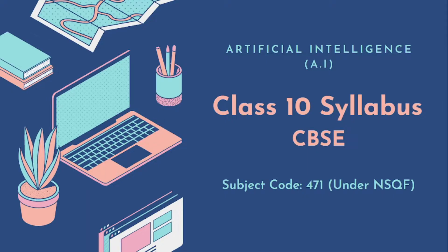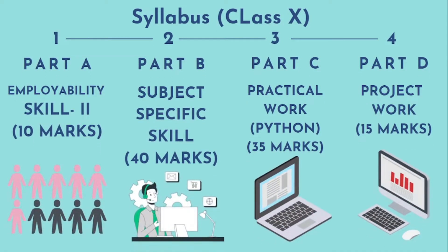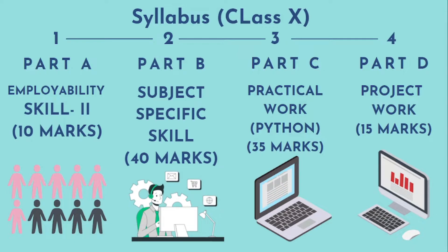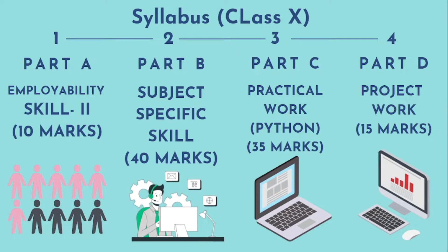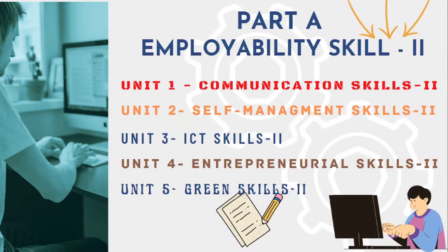The Class 10th Artificial Intelligence syllabus is bifurcated into 4 parts. Part A is Employability Skills, which carries 10 marks. Part B is Subject Specific Skill, which carries 40 marks. Part C is Project Work, which carries 35 marks. And Part D is Practical File and Viva, which carries 15 marks.